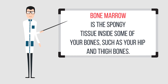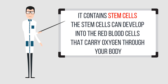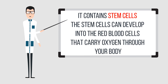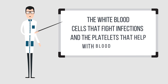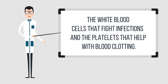Bone marrow is the spongy tissue inside some of your bones, such as your hip and thigh bones. It contains stem cells. The stem cells can develop into red blood cells that carry oxygen through your body, the white blood cells that fight infections, and the platelets that help with blood clotting.